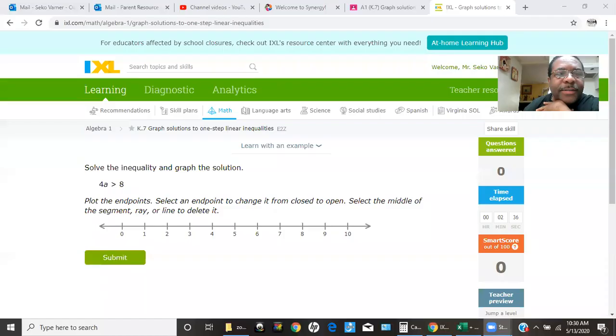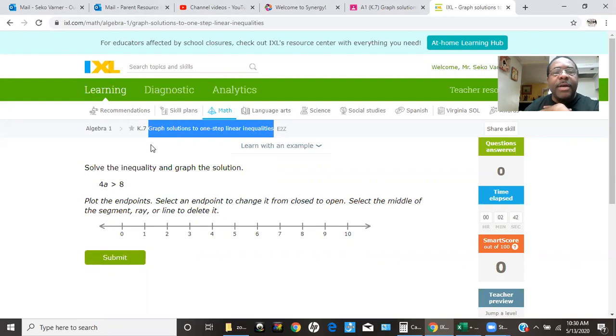All right, it's time for K7 on IXL. That is graphing solutions to one-step linear inequalities. How to graph a solution to a one-step linear inequality.